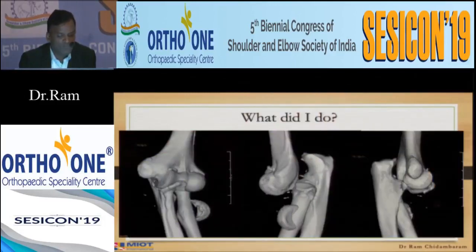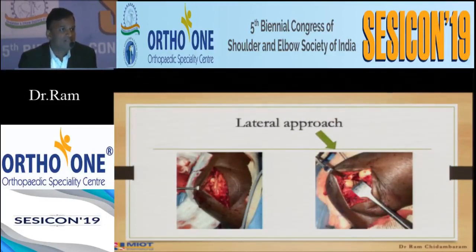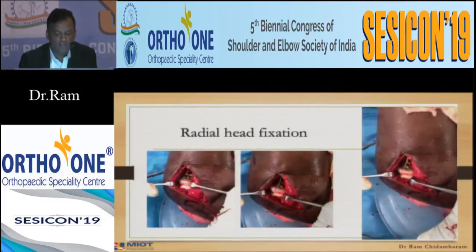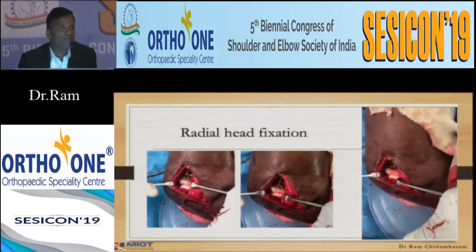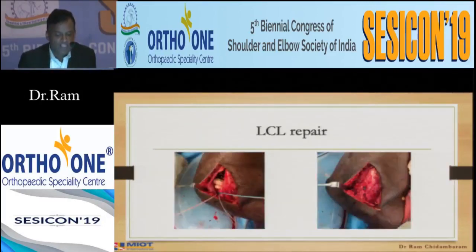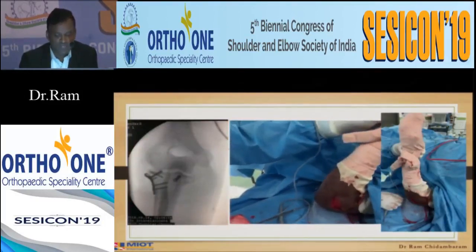What did I do for this case? Lateral approach. The radial head fragment was separate — I took it out, put it back in the radial head where it belongs, and fixed it with headless screws and a rim-and-head plate. You should be able to move it on the table, otherwise you will not get a good result. I then proceeded with the lateral collateral ligament repair using a triple-loaded anchor, because we are shoulder surgeons.